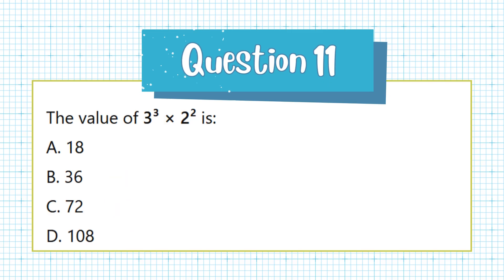Question 11. The value of 3³ × 2² is: a. 18, b. 36, c. 72, d. 108.